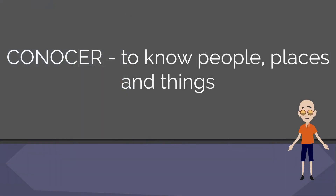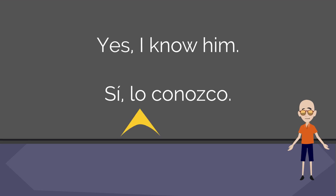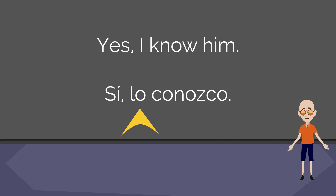We're going to be doing our practice sentences utilizing the verb 'conocer.' Remember you learned that last time — 'conocer' is to know people, places, and things. It's like saying you're familiar with something or someone. In the last lesson we made sentences like 'Do you know Juan?' — '¿Conoces a Juan?' Now if we want to answer that question with 'Yes, I know him,' 'him' is going to be the direct object pronoun — 'Sí, lo conozco.' Now 'lo' is the direct object pronoun, and like many other things in Spanish, it agrees in number and gender with the object it's replacing. In this case it's Juan, who's masculine, so it's going to be 'lo.'